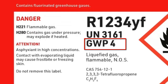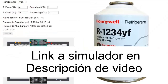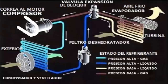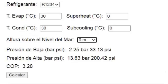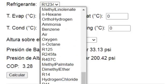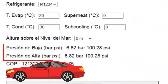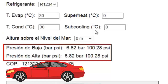Let's now observe the behavior of our R1234YF in the cooling cycle. Let's begin by selecting our R1234YF in the simulator. At this point, the AC system is turned off, so the temperature of the evaporator and condenser will be the same, and the pressure of the gas will correspond to the ambient temperature. In this example, we'll assume an outside temperature of 30 degrees Celsius, resulting in the following pressure values.